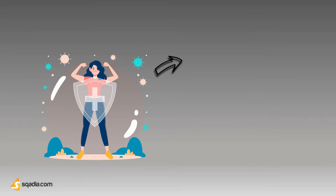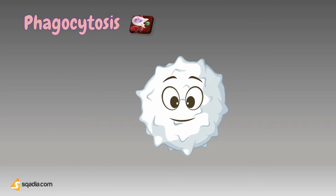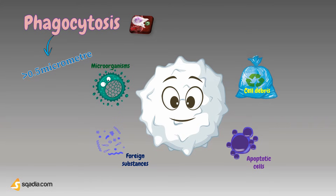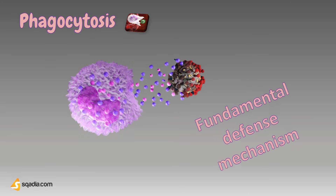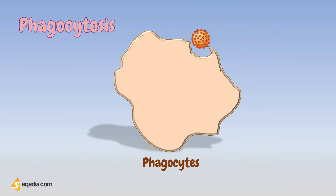Among many other phenomena that the body uses to fight against foreign invading microbes, phagocytosis is an important mechanism. Phagocytosis is a normal cellular process for ingesting and eliminating particles larger than 0.5 micrometer in diameter — that can be the cell's own debris or waste, microorganisms, foreign substances, and apoptotic cells. This process exists in many types of cells and is an essential process for tissue homeostasis. Hence, phagocytosis is a fundamental defense mechanism against invading foreign microbes. We will discuss this detailed mechanism in our upcoming videos, but here we will try to understand this concept briefly.